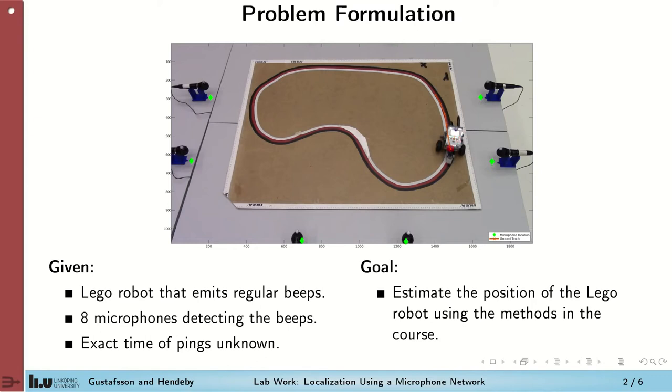We have this robotic Lego vehicle that travels along this track. It emits beeps every half second, which is then recorded by these microphones. Due to the time difference of travelling to these microphones, the time when a beep is recorded is slightly different in the different microphones. And that is what you are going to utilise to detect or position the robot.